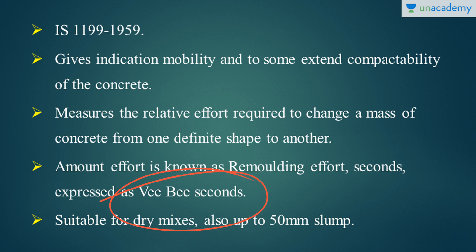This test is really suitable for dry mixes where the slump cone test doesn't provide useful results, and it is suitable up to a slump value of 50mm. Beyond 50mm slump, the remoulding effort will be so quick that we won't be able to record the correct time. So up to 50mm slump, this test is a very good one.